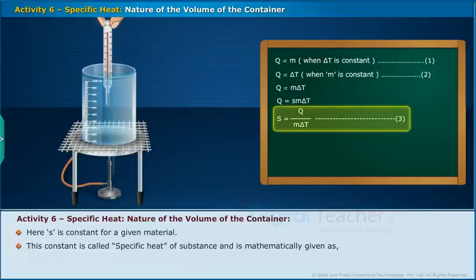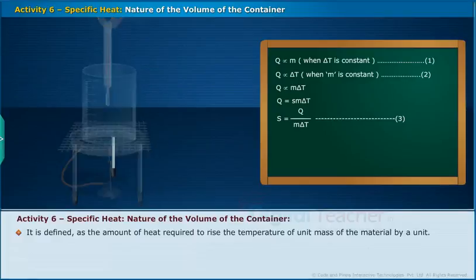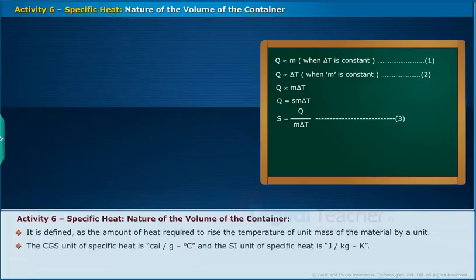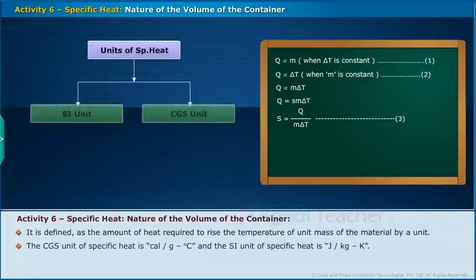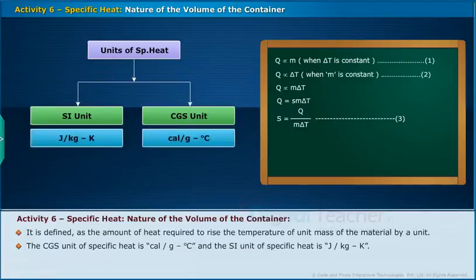This constant S is called the specific heat of the substance, mathematically given as S = Q / (M·delta T) — Equation 3. It is defined as the amount of heat required to raise the temperature of unit mass of the material by one unit. The CGS unit of specific heat is calorie per gram degree Celsius, and the SI unit is Joule per kilogram.